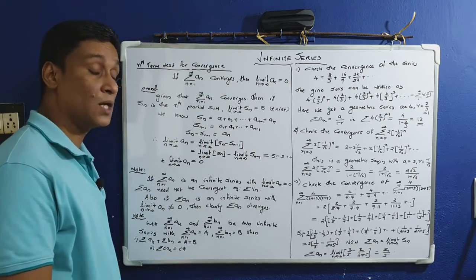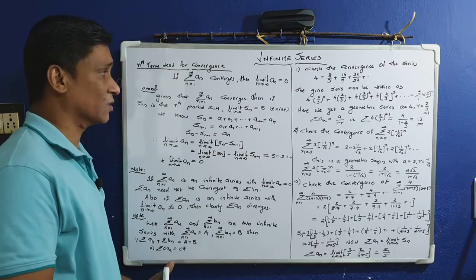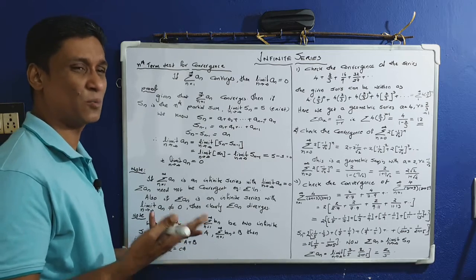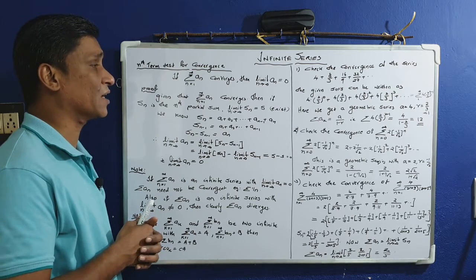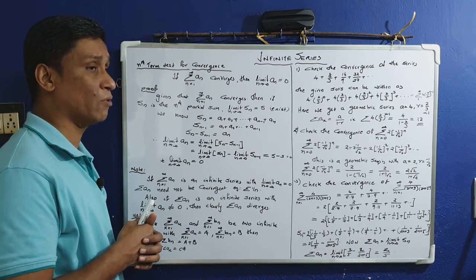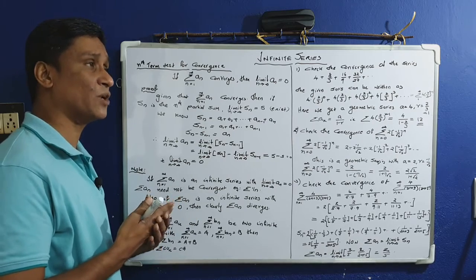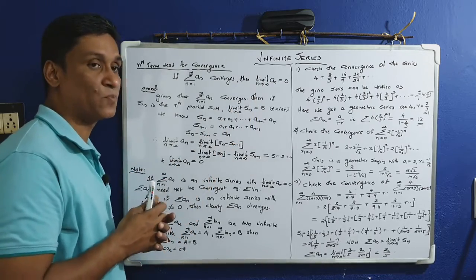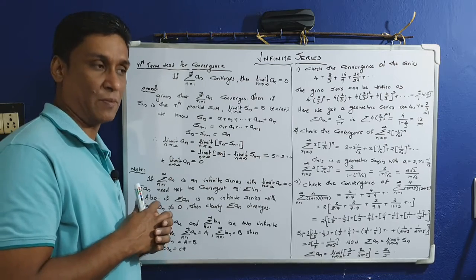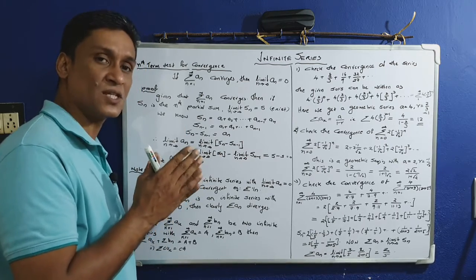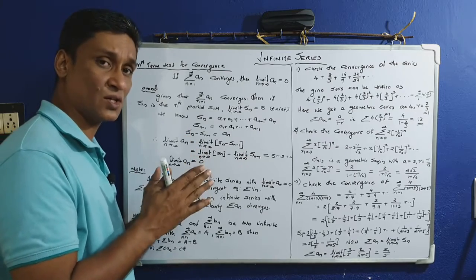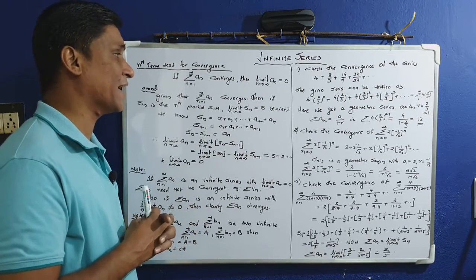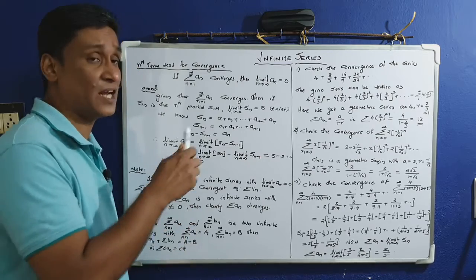We will talk about two problems in this video. The nth term test for convergence is a basic result: if sigma from n=1 to infinity of a_n converges, then the limit as n tends to infinity of a_n equals 0. That is, if the infinite series is convergent, then its nth term will tend to 0 as n tends to infinity.